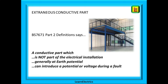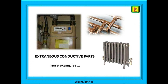Extraneous conductive parts are defined as those things that are not part of the electrical installation. They are generally at earth potential because of how they are positioned or constructed, and they can contribute to voltage differences during electrical faults in other parts of the installation. Because of their earthy connection — for example, in the ground — they can act as a zero point for electric shocks.